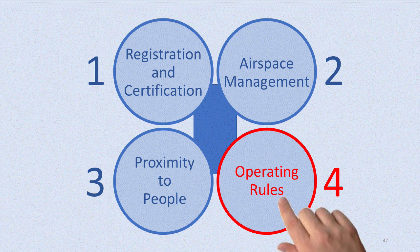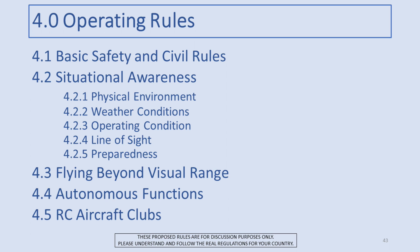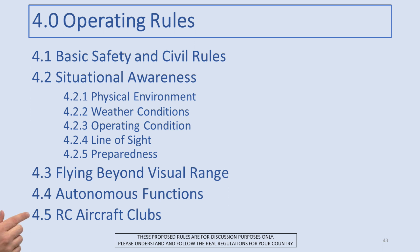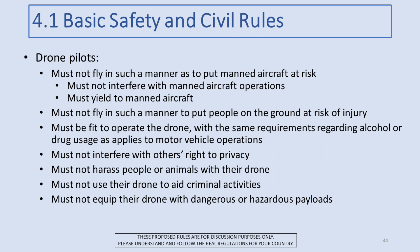Operating Rules is the fourth and final module of Don's Drone Rules. In this module we'll start with basic safety and civil rules, spend a considerable amount of time on situational awareness, flying beyond visual range, autonomous functions, and RC aircraft clubs. Rather than a multitude of very specific rules like in the Canadian regulations, what I tried to design were fairly high-level regulations that were clear enough that you could easily distinguish whether a particular activity was right or wrong.